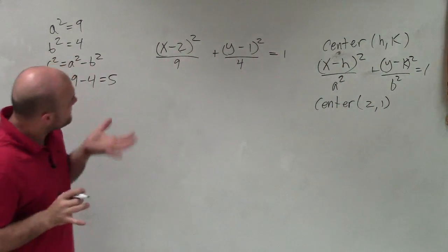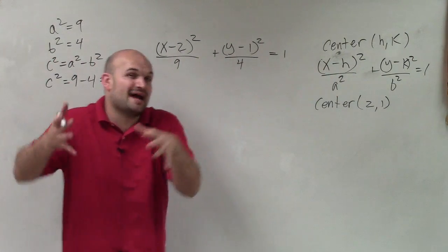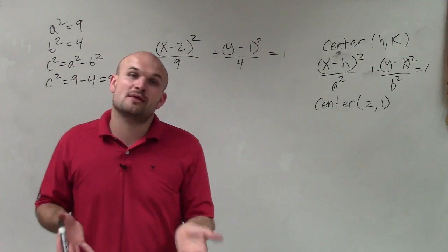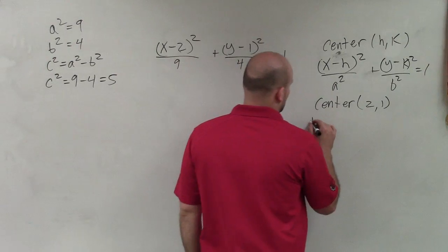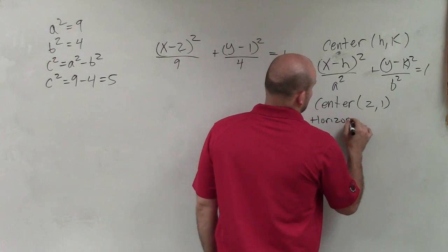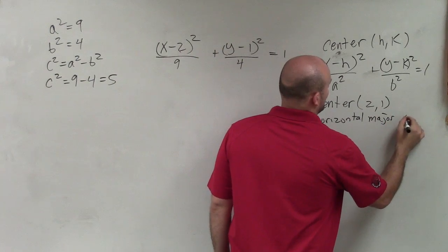The next thing is, I look at—my a² I said was under the x. Whenever my a is under the x, I know that my major axis is going to be horizontal. So I'm going to have a horizontal major axis.